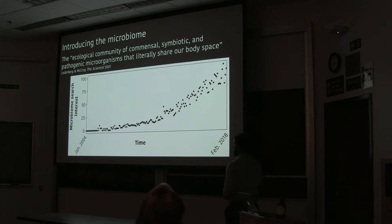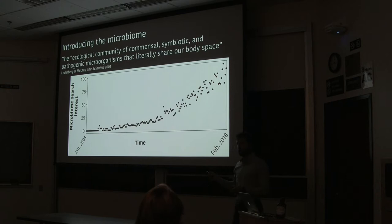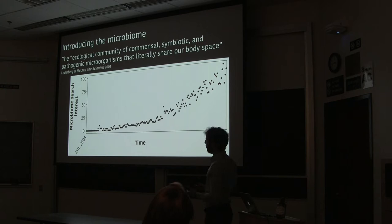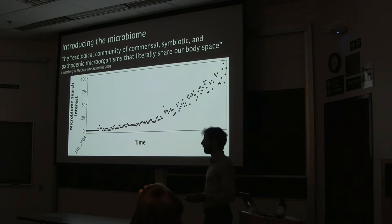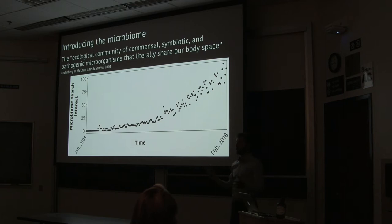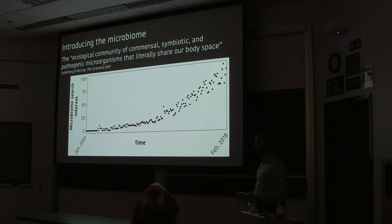This is a plot from Google Trends that measures general scientific search interest in the microbiome over time. Since 2004 there's been a major increase in that interest. A lot of it is driven by the human microbiome, but there's also a lot of interest in whether those examples — cows, termites, bees, and humans — apply to other groups of animals. We're at peak microbiome right now.